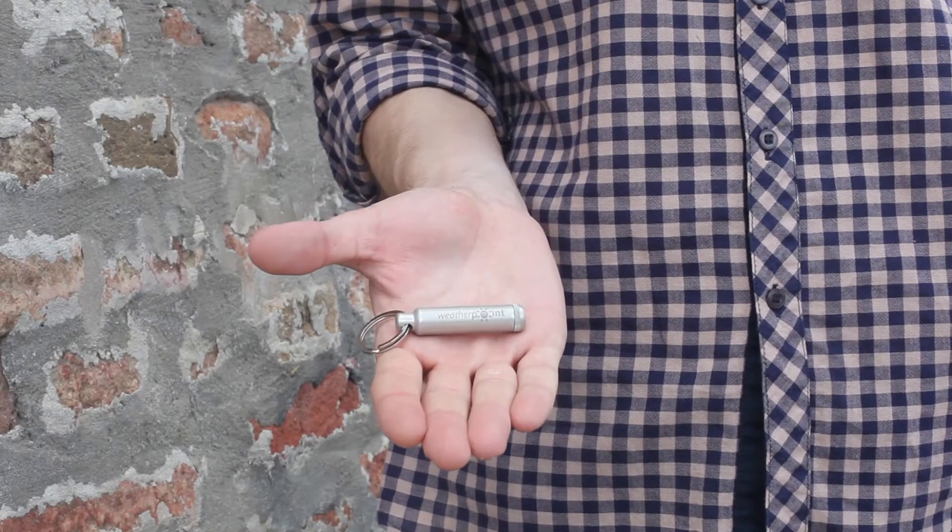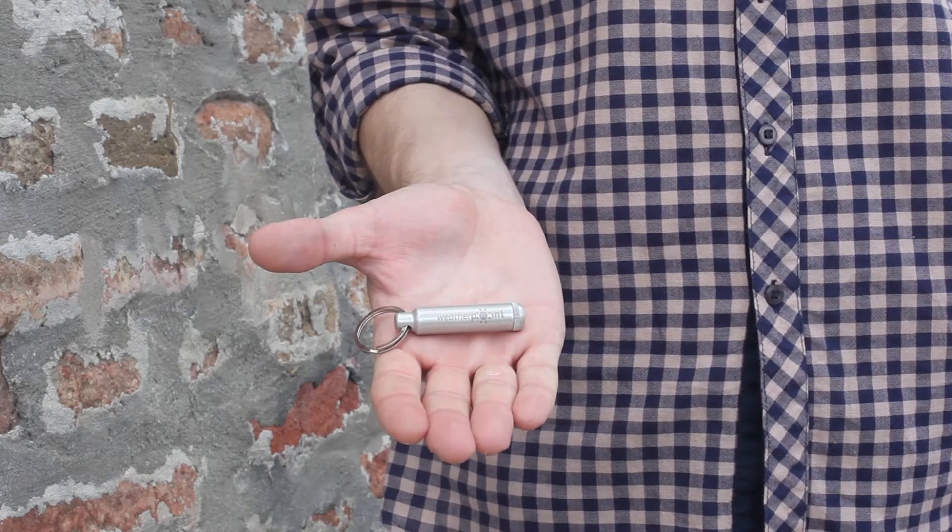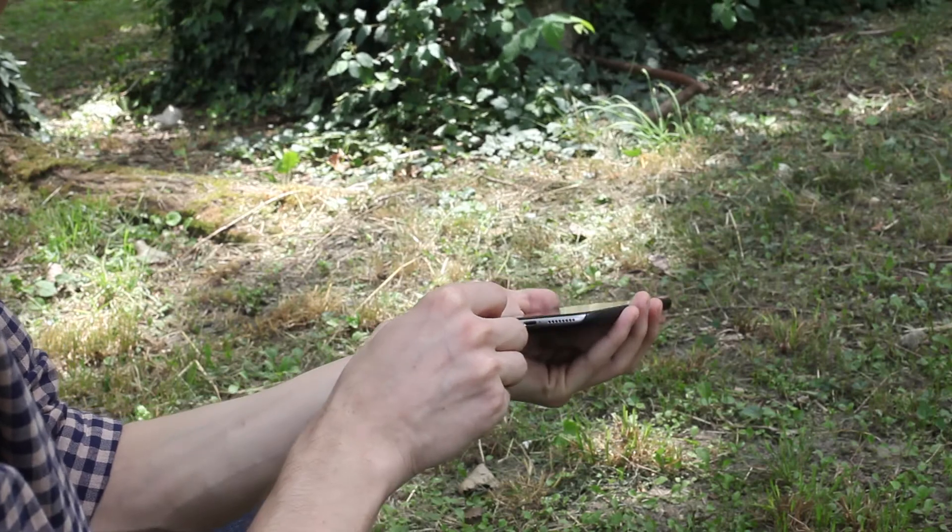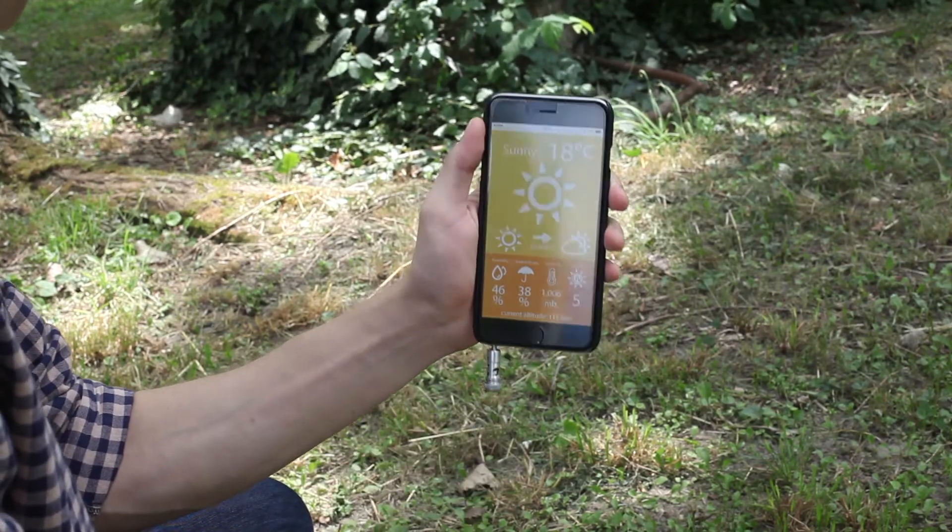So we have created the world's smallest weather station that can easily fit in your palm. Simply plug WeatherPoint into your device and start the app. Simple as that.